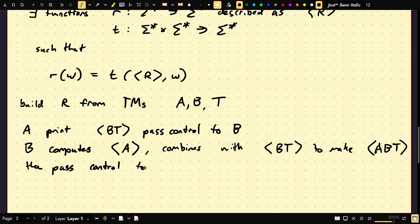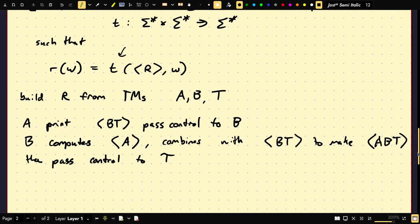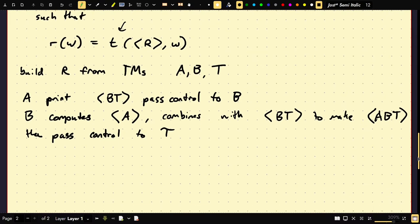Whatever T could be, that's it. Instead of halting at when B is done, it just passes control to the Turing machine T and T is then the Turing machine for this function.